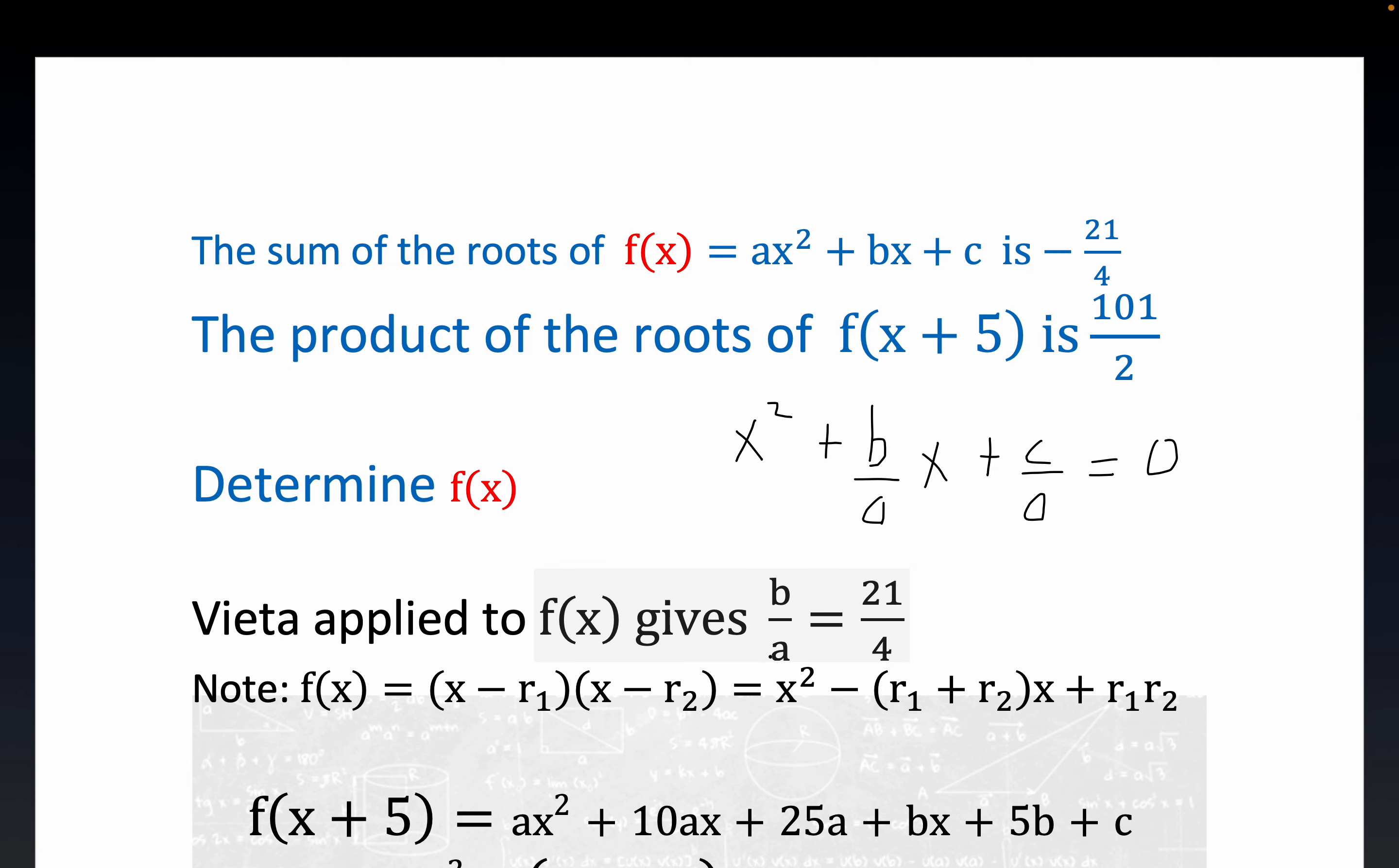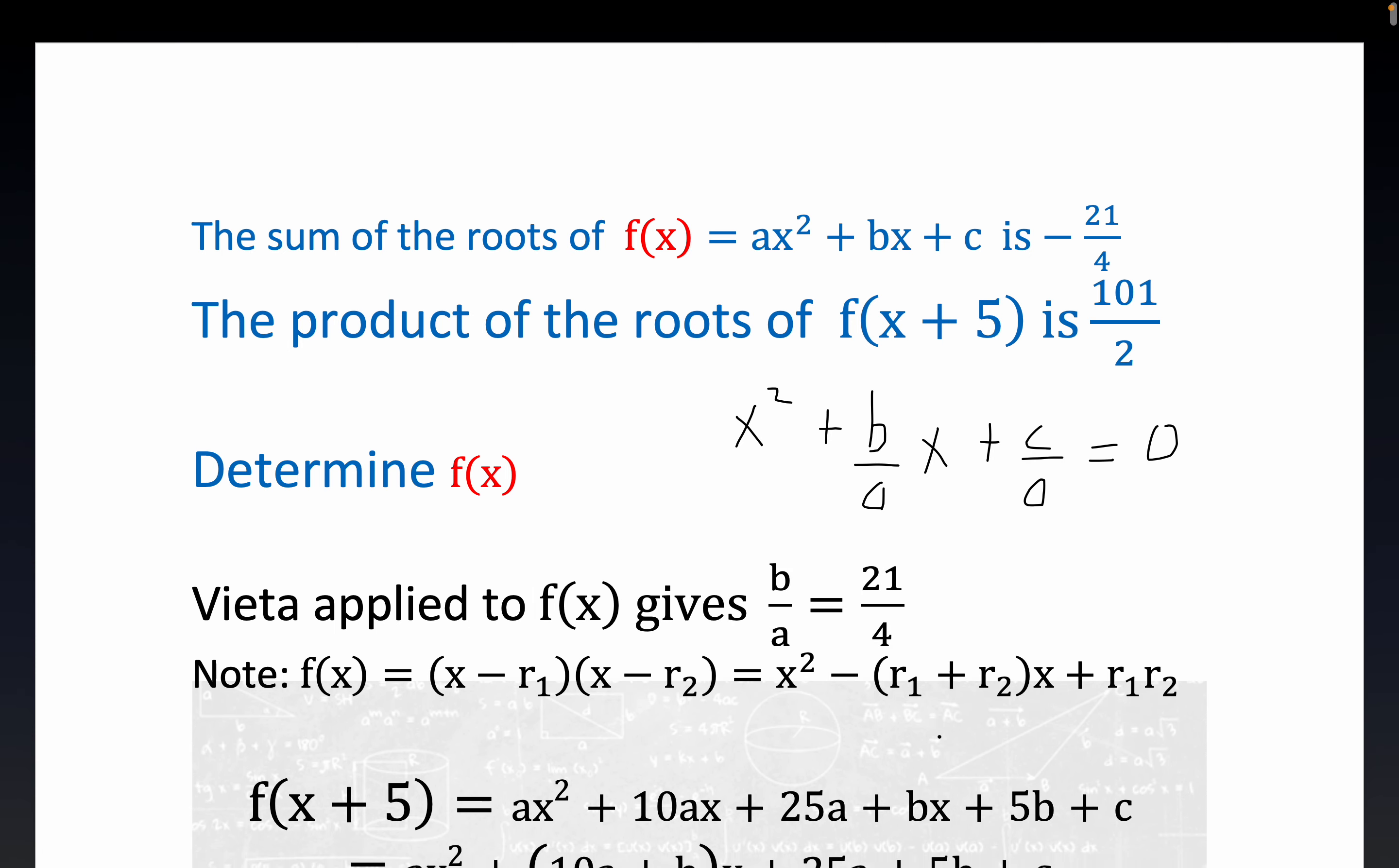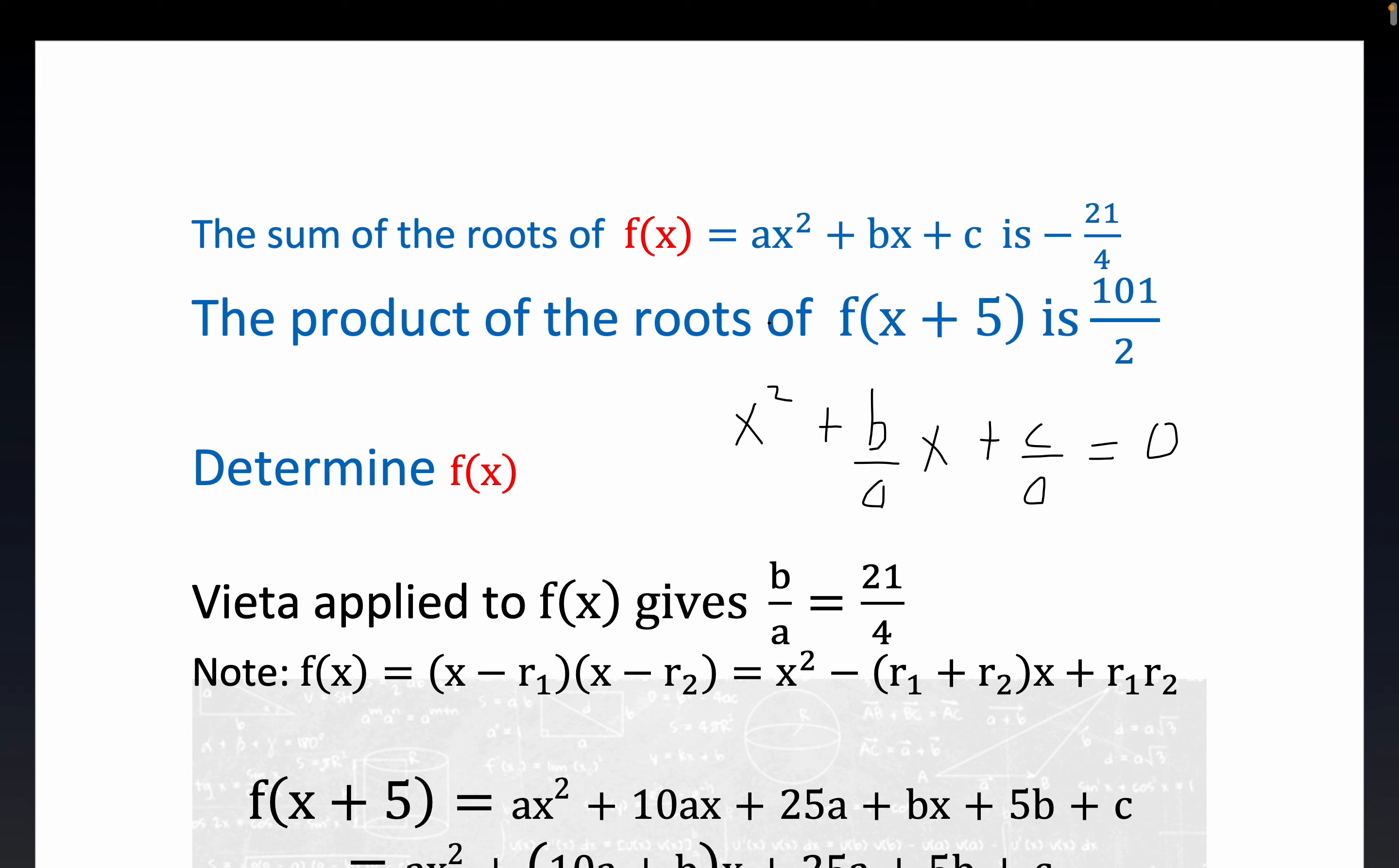So that's where we got this. Now, so we also know that the product of the roots of this translate, F of X plus 5, this is in order this graph would be shifted to the left five units. Not that you really need to know that as far as working the problem.